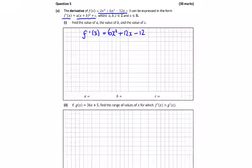And they want us to write this in this form, a by x plus b squared plus c. So we've got to take 6 outside, x squared plus 2x minus 2.